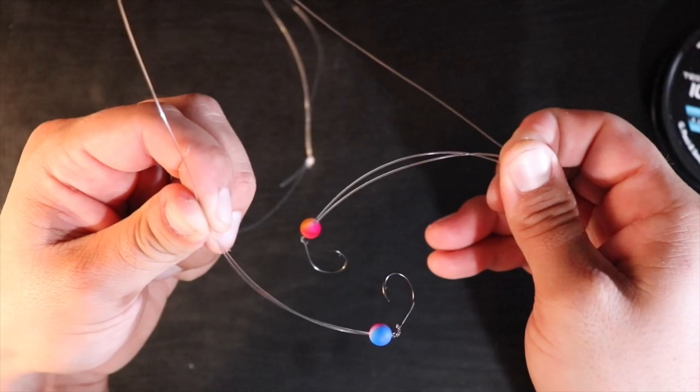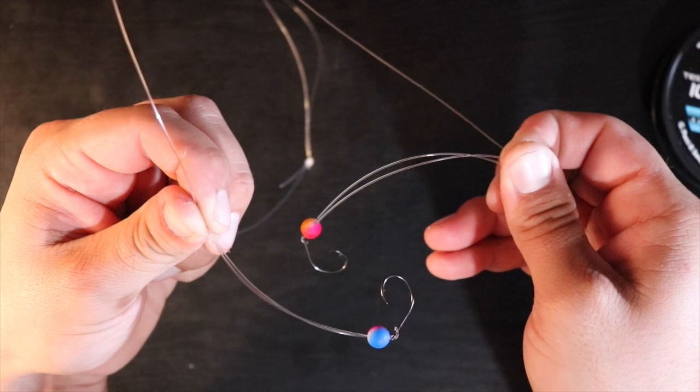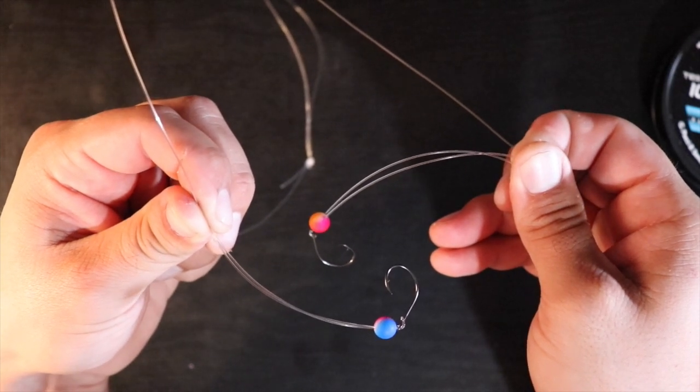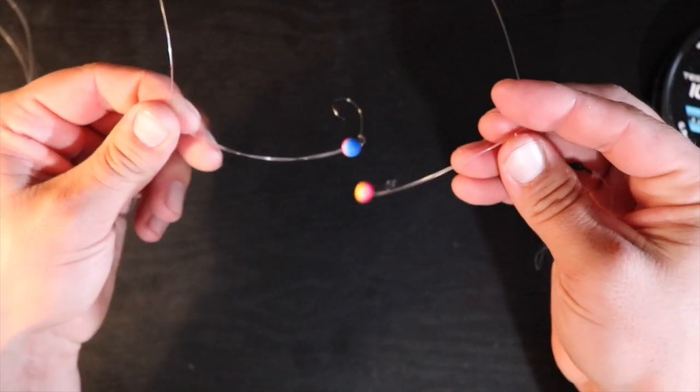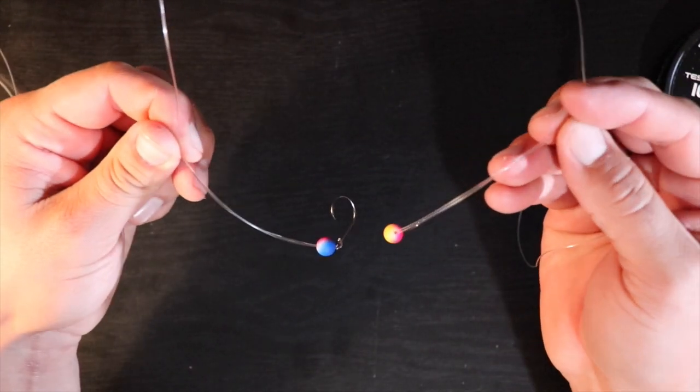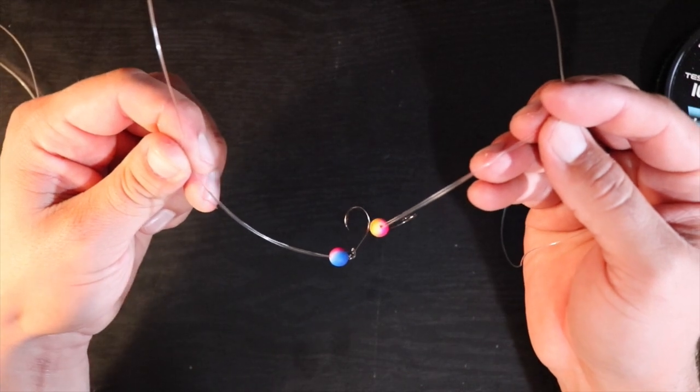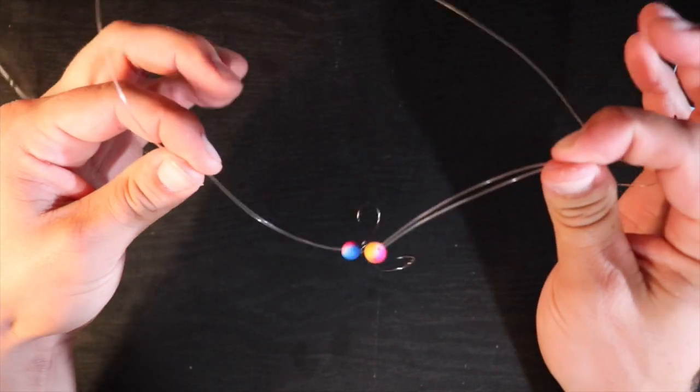All right, so it's as simple as that. Got my double drop rig right there, got my two different color beads on there, my size four circle hooks. This is going to be a perfect rig for catching those whiting right now, kind of the best fish to target throughout the winter here on the Gulf Coast.